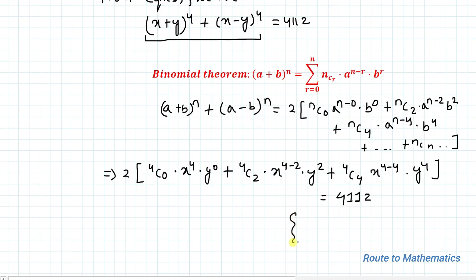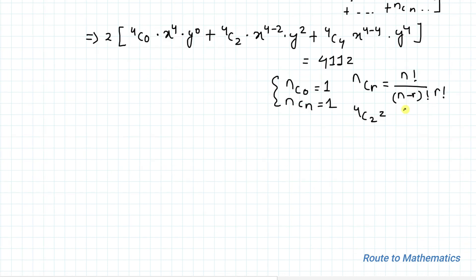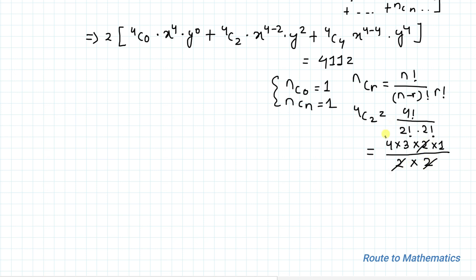We know that nC0 = 1 and nCn = 1. The second term involves 4C2. Using the formula nCr = n! / ((n−r)!·r!), we get 4C2 = 4! / (2!·2!) = (4×3×2×1)/(2×2) = 6.